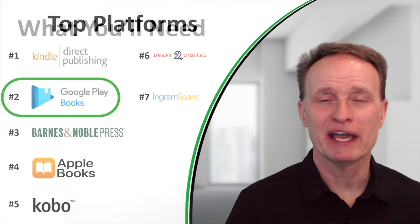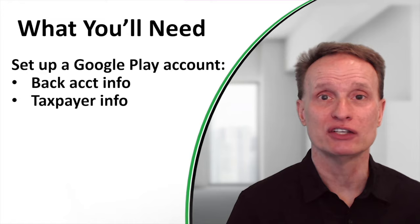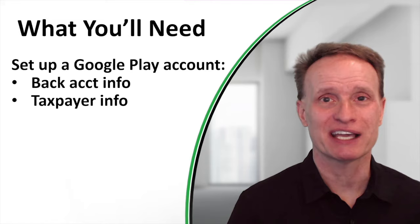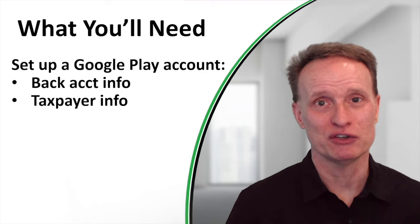To publish your book on Google Play, you're going to need a few things. First, you need to set up your Google Play account, and to do that you'll need your bank account information — your bank's routing number and your bank account number — so that Google Play can make a direct deposit when they sell your books. You'll also need your taxpayer ID number so Google Play can send you tax information at the end of each year.